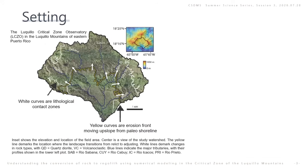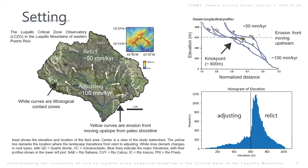Before we dig into the specific model, I would like to introduce my study area briefly. The lithology of my study area is almost uniform. Most of the study area consists of coarse diorite, and a minor area consists of volcanic rock. The study area shows a transient landscape. The erosion rate on the upper portion is 50 mm per kiloyear from cosmogenic radionuclide. However, the lower portion's erosion rate is 2 times larger than on the upper part.